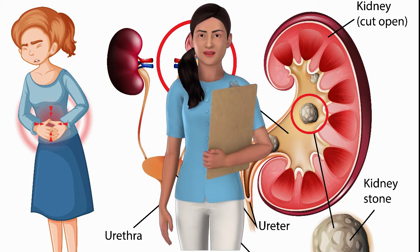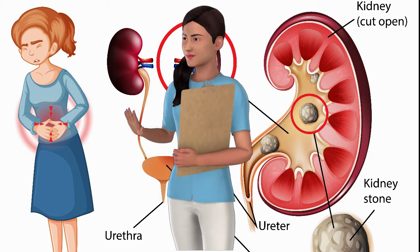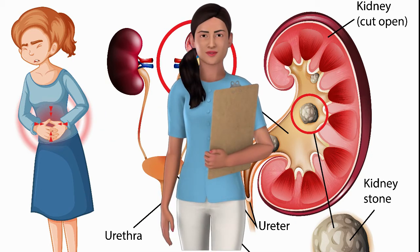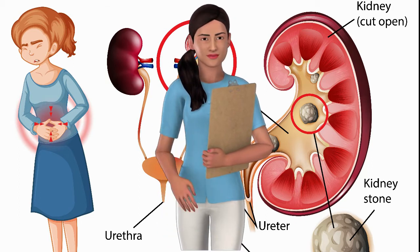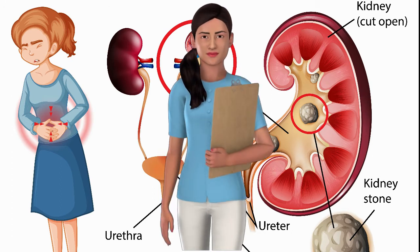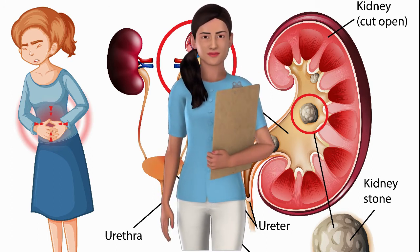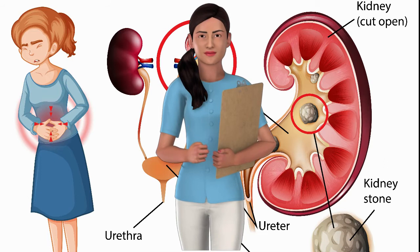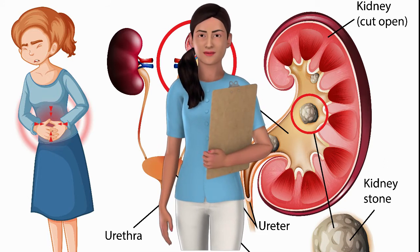Each type is made up of different crystals and they also have different causes. There are several different types of kidney stones, including calcium, cysteine, uric acid, and struvite.